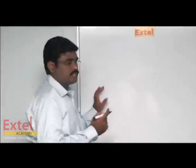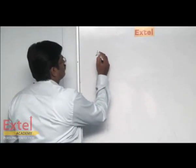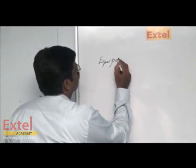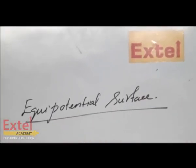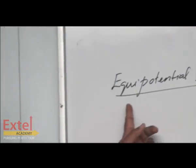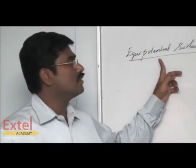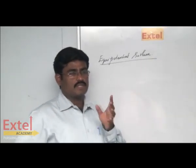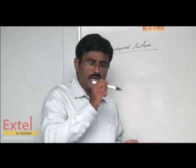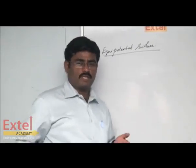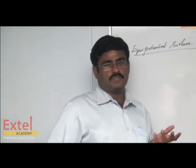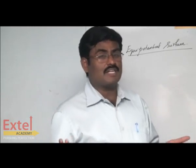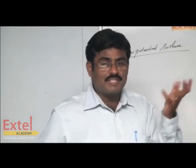The next topic we are going to see is the equipotential surface. From the name itself, one can understand that the potential is equal across a given surface. In a given surface, if you look at any point — more than one point — at all the points the potentials are equal, we can call that surface an equipotential surface. You should understand what it is diagrammatically.